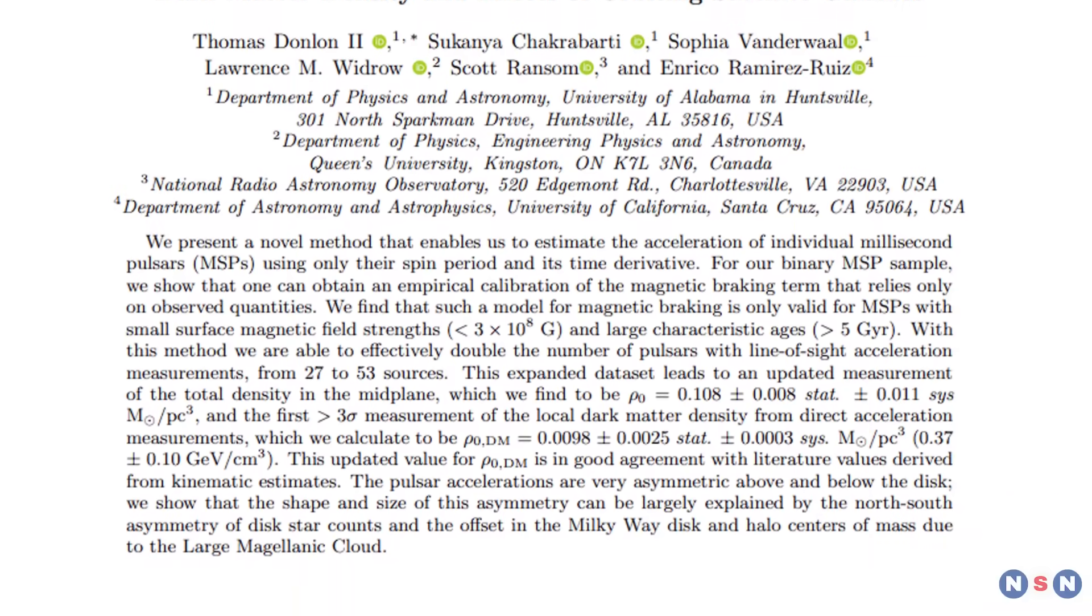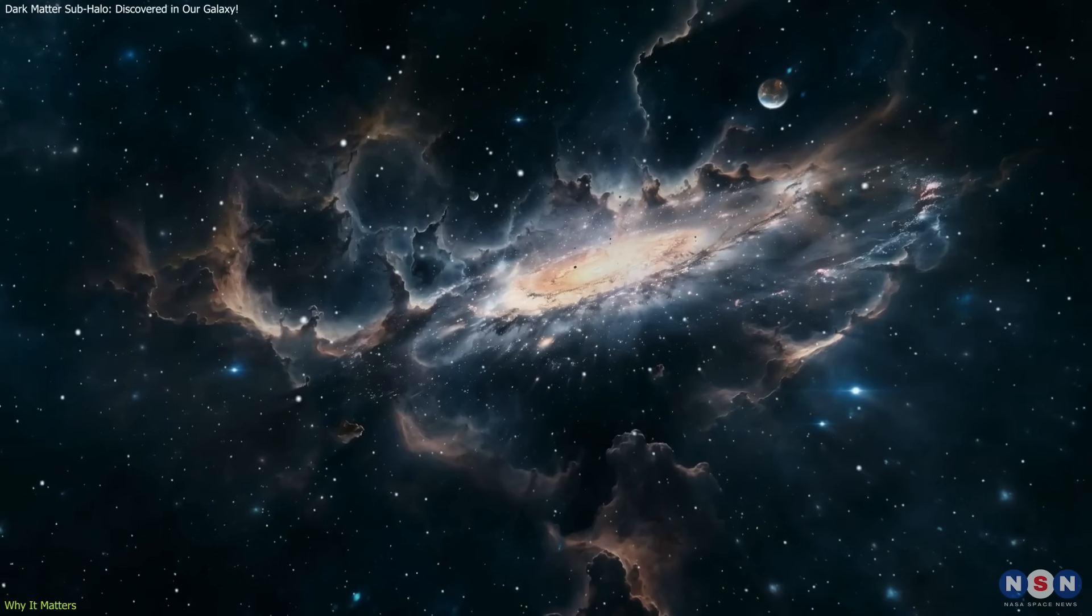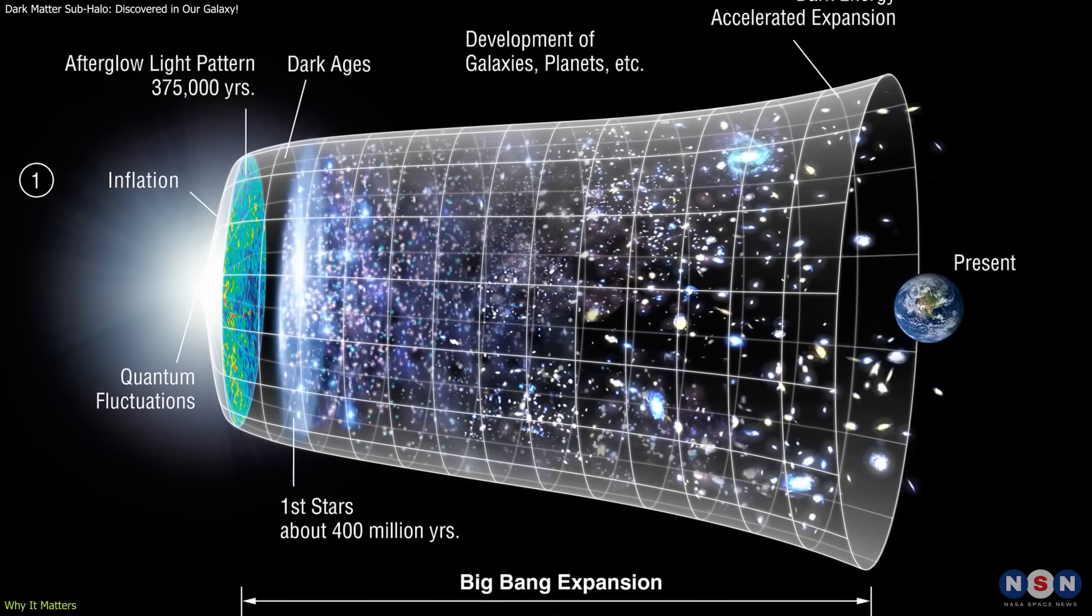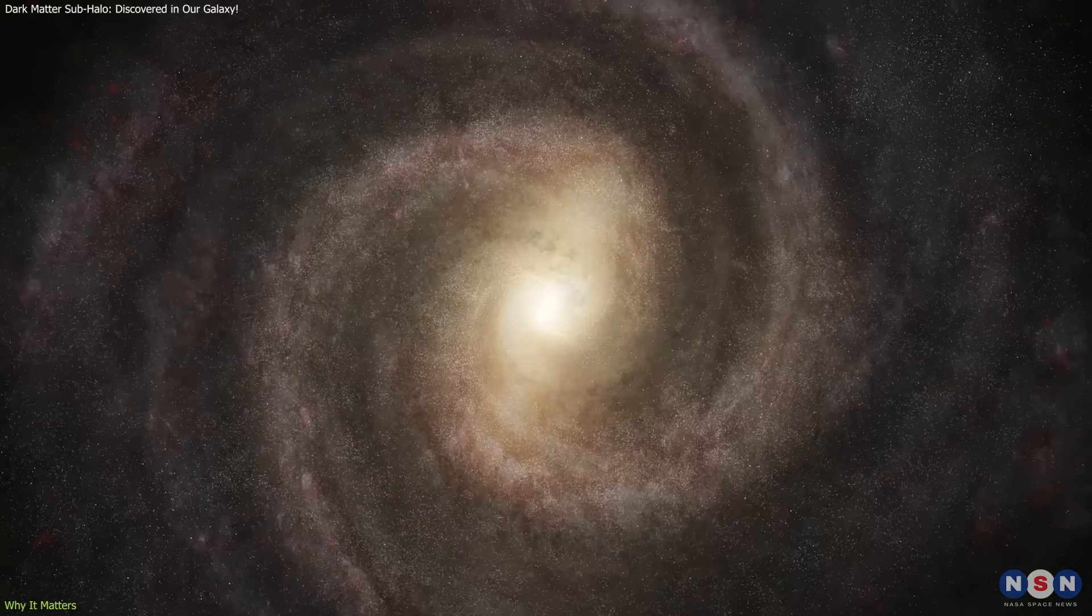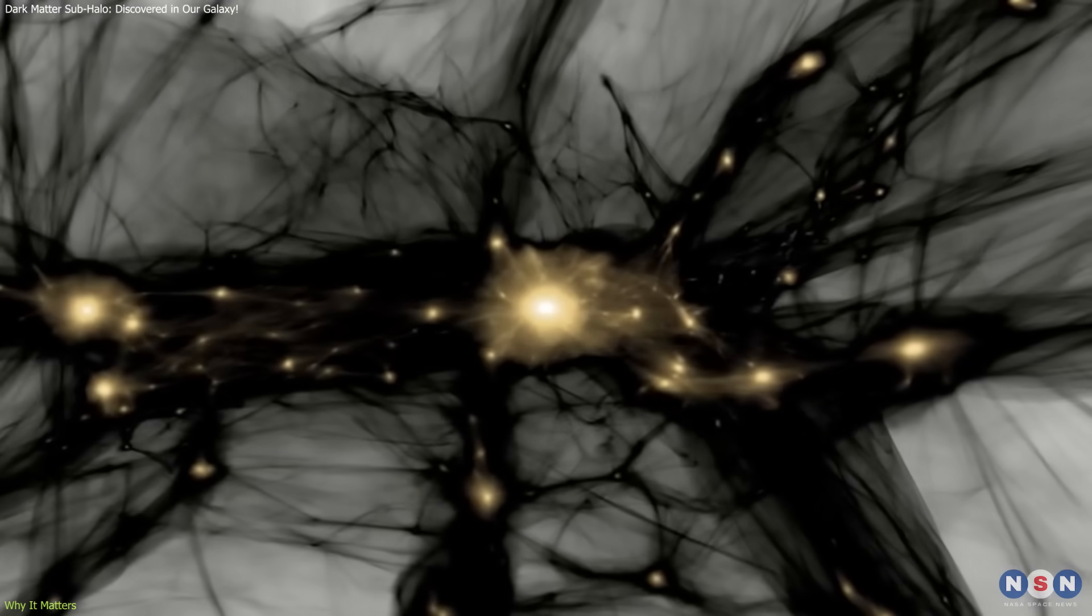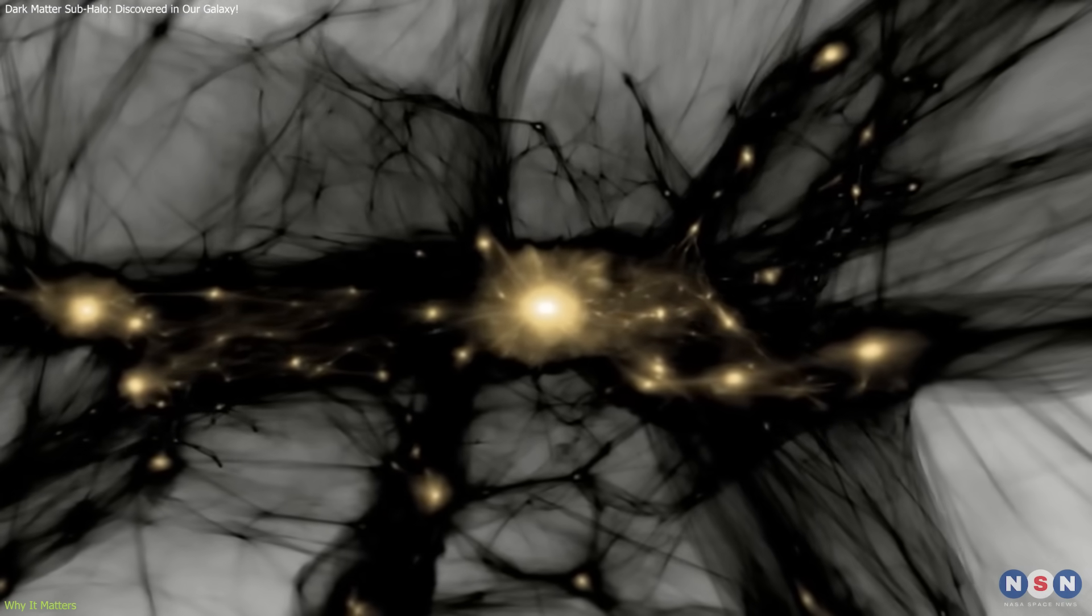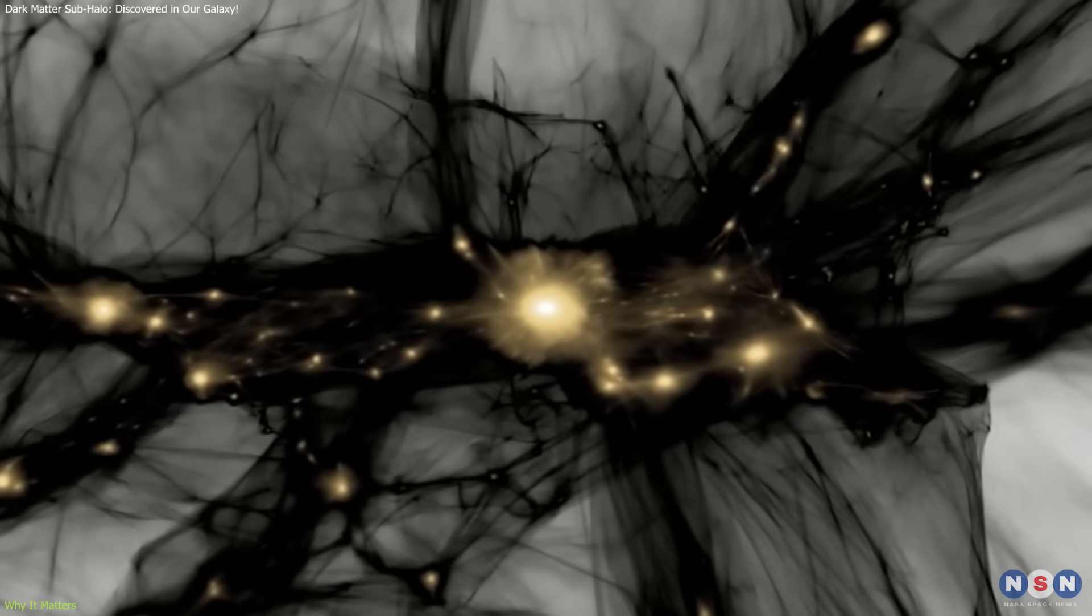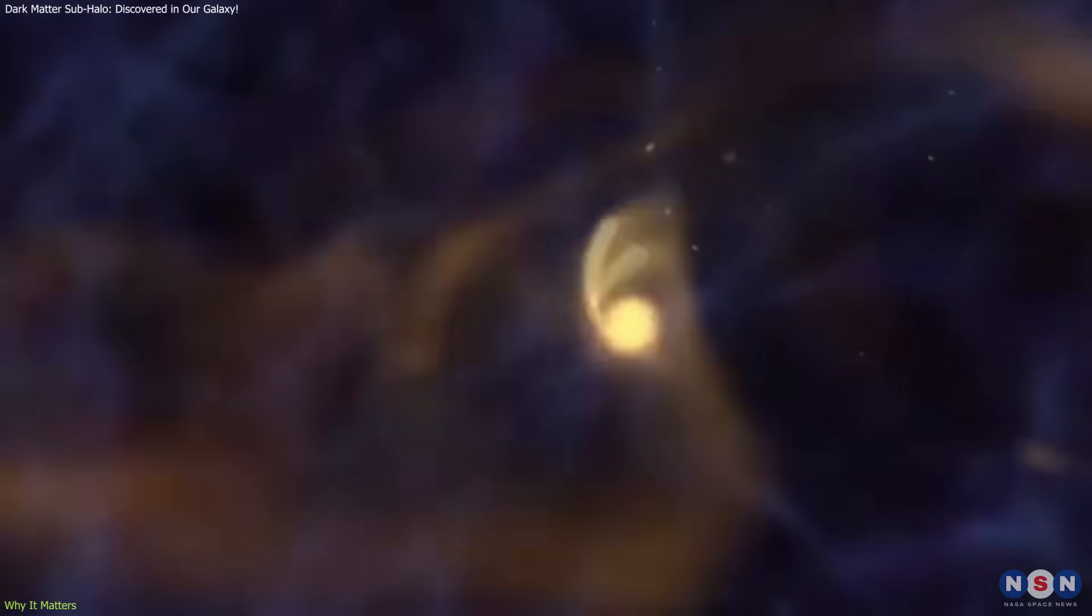The importance of this detection lies in how it connects to the broader framework of cosmology. According to the lambda-cold dark matter model, galaxies like the Milky Way are not built from smooth spheres of it. Instead, simulations predict that halos should be clumpy, filled with smaller concentrations known as sub-halos. These structures act as invisible anchors, shaping how gas collapses into stars and how galaxies grow over billions of years.